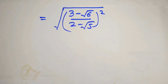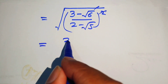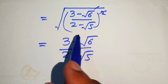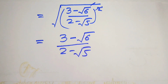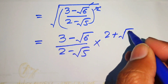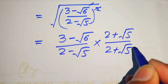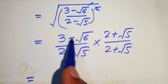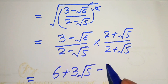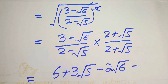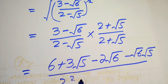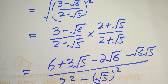The squares and the outer square root cancel, leaving us with (3 − √6) divided by (2 − √5). To simplify further, we rationalize by multiplying numerator and denominator by (2 + √5), giving: 6 + 3√5 − 2√6 − √30, divided by 2² minus (√5)².